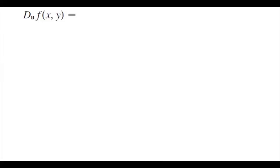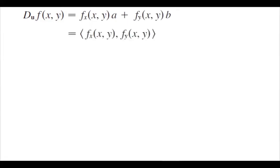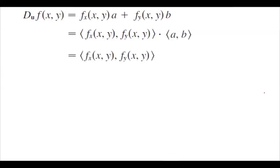We just learned that the directional derivative of function f in the direction of unit vector u is the partial derivative of f with respect to x times a, plus the partial derivative of f with respect to y times b, where a and b are the components of the unit vector u. From elementary calculus, we can use the dot product — this is basically the vector (f_x, f_y) dotted with the vector (a, b).